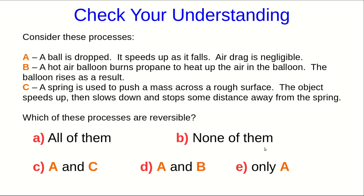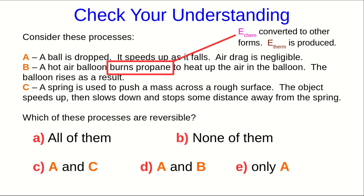I ended the previous part of this video with this question, and let's see how you did. In the case of the hot air balloon, it's burning propane. That means chemical energy is being converted to other forms, and so there must be some thermal energy produced. That means this has to be irreversible.